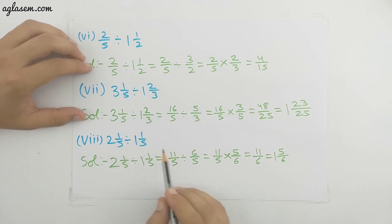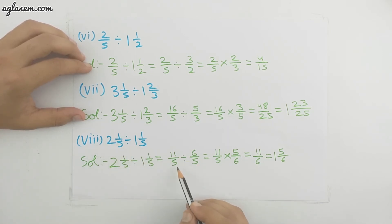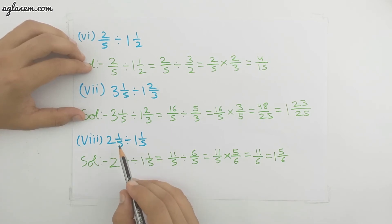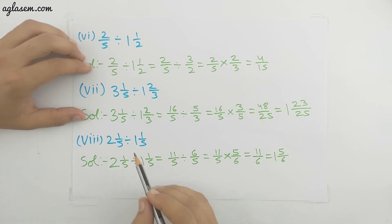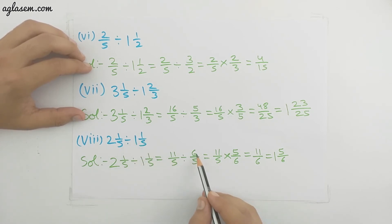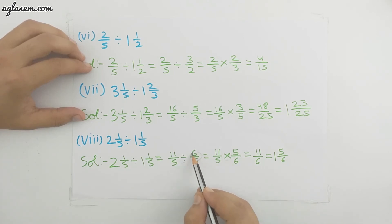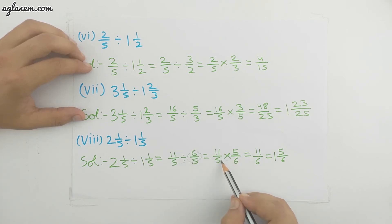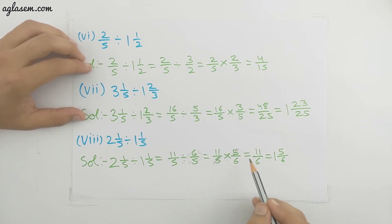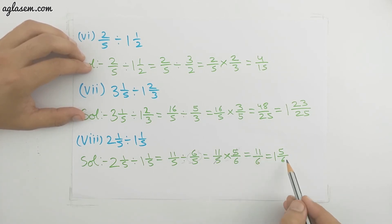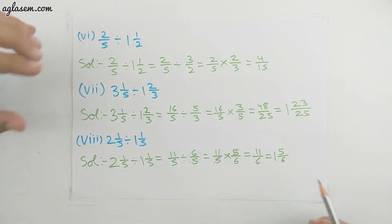Last part: 2 whole 1/5 divided by 1 whole 1/6. We change 2 whole 1/5 to 11/5 and 1 whole 1/6 to 7/6. Dividing 11/5 by 7/6 becomes 11/5 multiplied by 6/7. The 5s cancel — wait, 5 is common in both sides — giving 11/6, wait actually it simplifies: 11 by 6 is the answer. We change the improper fraction 11/6 to the mixed fraction 1 whole 5/6. That was all for the video — we've solved every question of this exercise. For more NCERT videos, keep browsing Aglasem School.